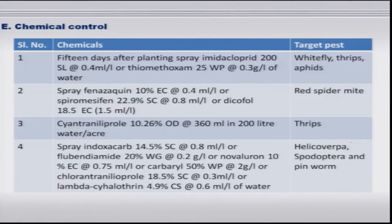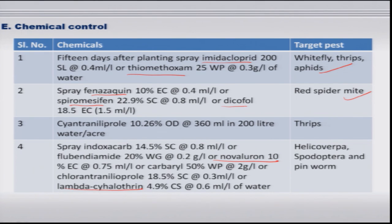Based on economic threshold levels, chemicals can be used: imidacloprid or thiamethoxam against sucking pests; fenazaquin, spiromesifen, or dicofol against mites; and IGRs such as novaluron, pyrethroids, and other chemicals for Helicoverpa, Spodoptera, and pinworm. Thank you.